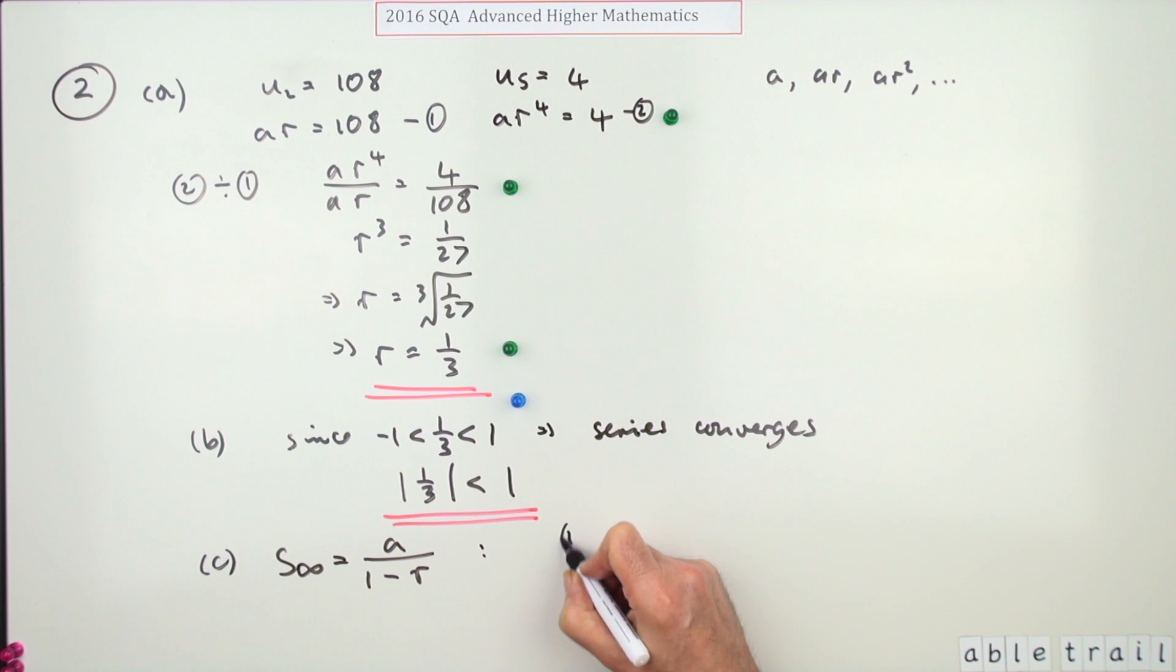If AR, using number one, if AR is 108, that means a third of A is 108. That means that A is going to be three times that, which is 324. So there's your answer. It's going to be 324, and I should have said, getting 324 gets you a mark. It'll be 324 over one minus that over two thirds, which means that the sum to infinity will be 162 times three, 486.